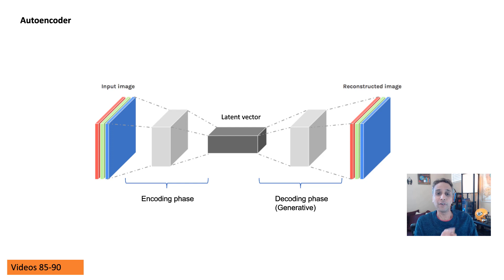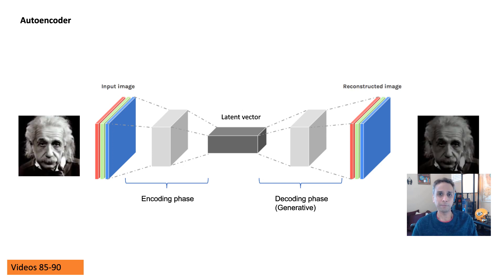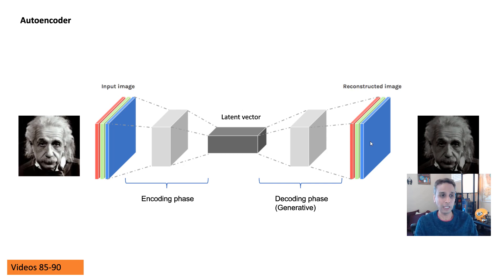The autoencoder part of variational autoencoder should make sense to you — we covered this in videos 85 to 90. An autoencoder, as the name suggests, encodes the input data into a smaller space and then decodes it back to get the original data. You can take a bigger image and represent it in a smaller latent vector — let's say this vector is of size 5.